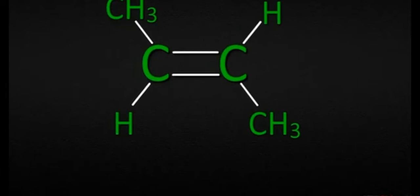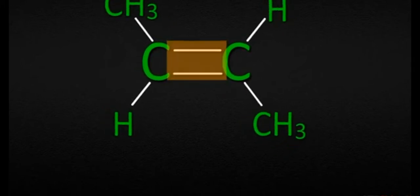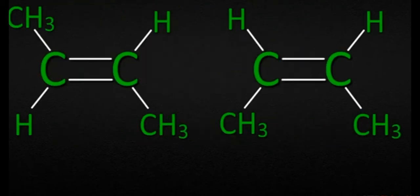Therefore, the rotation about the double bond is restricted or hindered. Because of the hindered rotation, the molecule of the type carbon A2B2 exhibits two spatial isomers, called geometrical isomers.